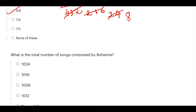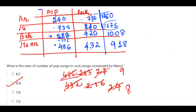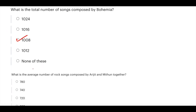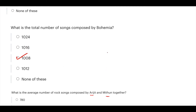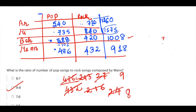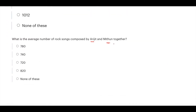Question 2: What is the total number of pop songs composed by Bohemia? Bohemia's pop songs total 1008 — option C is the answer. Question 3: What is the average number of rock songs composed by Arijit and Mithun together? Arijit = 720, Mithun = 840. Total = 1560, average = 1560 ÷ 2 = 780. Option A is the answer.